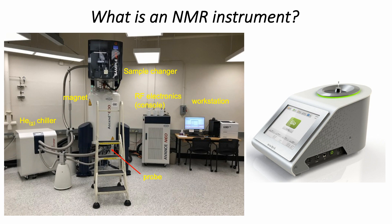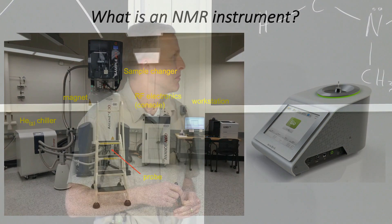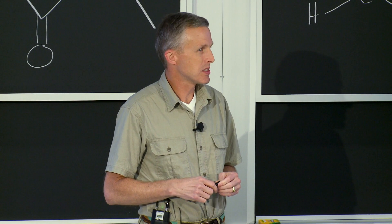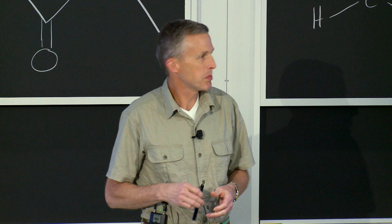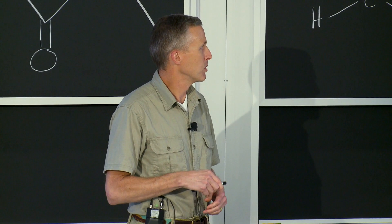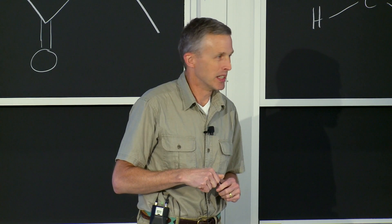NMR instruments come in two flavors. Here at MIT we have two types: ones referred to as high-resolution instruments, which generally have a stronger magnet and are bigger, and benchtop instruments, which is what you're going to use in your lab. Each has the exact same constituent parts. I'm going to go through one of our instruments and show you the individual parts — but keep in mind, it's the exact same thing that's in the instrument you'll be using.